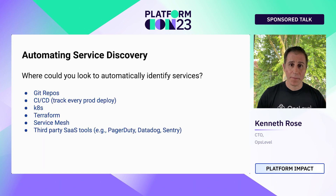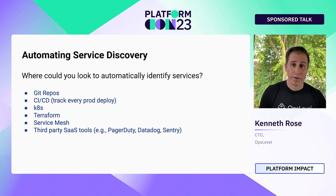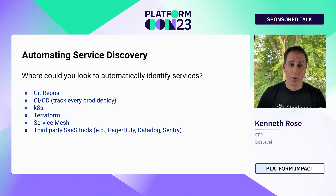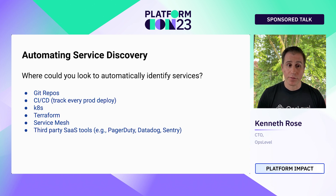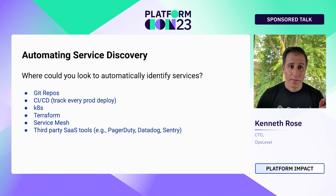If you wanted to build a system that could automatically populate a service catalog, where would you look? There are actually a bunch of sources. We could look at Git repositories — certain directory structures that correspond to services, or the existence of a Dockerfile that is exposing a port. We could look at our CI and CD systems, since every time we deploy something to production that is a service going out. If we're using Kubernetes, we can use the Kubernetes API to scrape what things constitute services running in prod. We could look at Terraform, our service mesh, our cloud account if we have lambdas, and third-party SaaS tools like PagerDuty, Datadog, or Sentry — monitoring tools that typically have a notion of a service. Depending on the size of your organization, you generally need to look at multiple of these sources to build a full and complete picture.